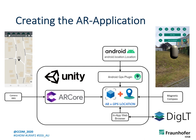Creating our own application was straightforward. DIGLT is already a very capable web application we wanted to utilize. We decided to use Unity on Android to write a simple application. The in-app web browser asset is used to display the web interface. It provides a JavaScript interface that allows us to transfer data between Unity and the web app. The GPS implementation of Unity was not precise enough, so we needed our own GPS plugin to get exact data. For the AR part, we used the AR plus GPS location asset, which uses Android's ARCore. The magnetic compass is used by the AR plus GPS location plugin — this will be important later on.